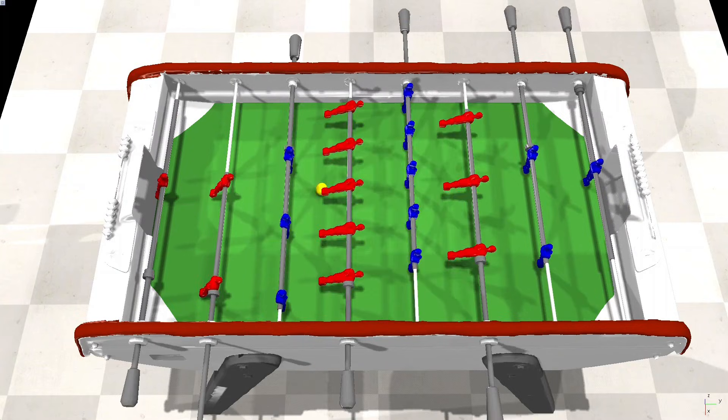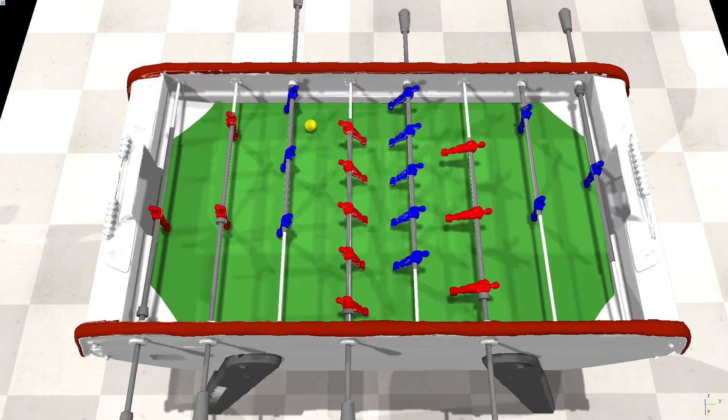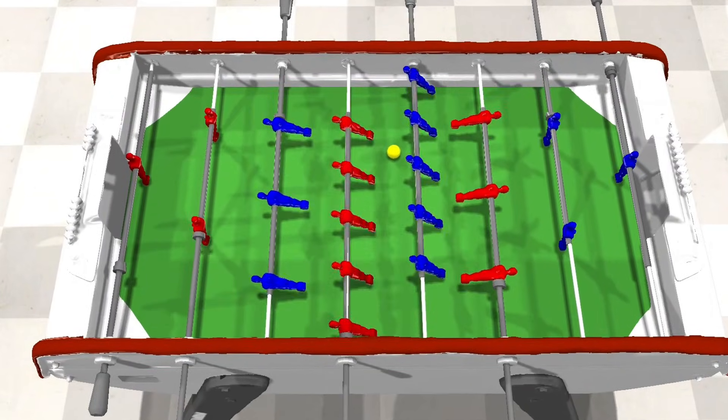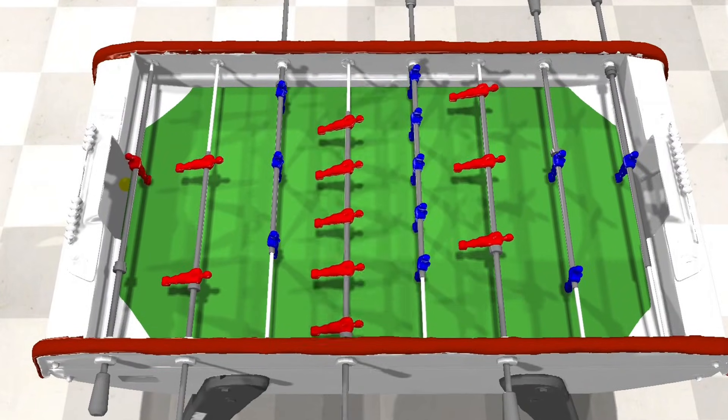Basically, the training wheels version. Right now, my virtual players have two modes. Whiff completely or accidentally score on ourselves. Not exactly championship material.